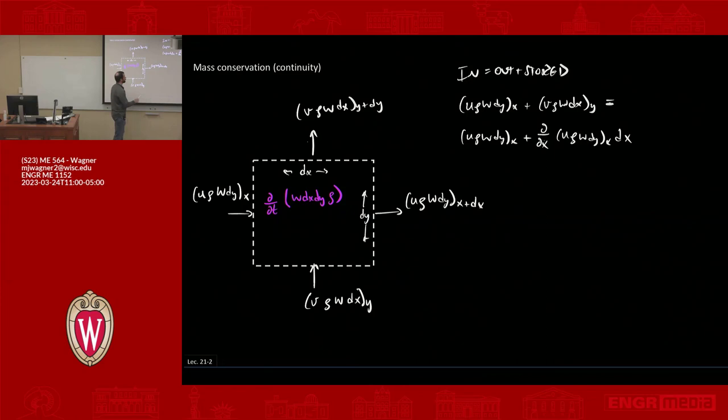Same thing we did for conduction, what's coming in plus the change with respect to x. So that's for x, we also have to do the same thing for y. So that becomes v ρ w dx at y plus d/dy of v ρ w dx at y times dy. And then finally we have to add in the storage term which is ∂/∂t of w dx dy times ρ.